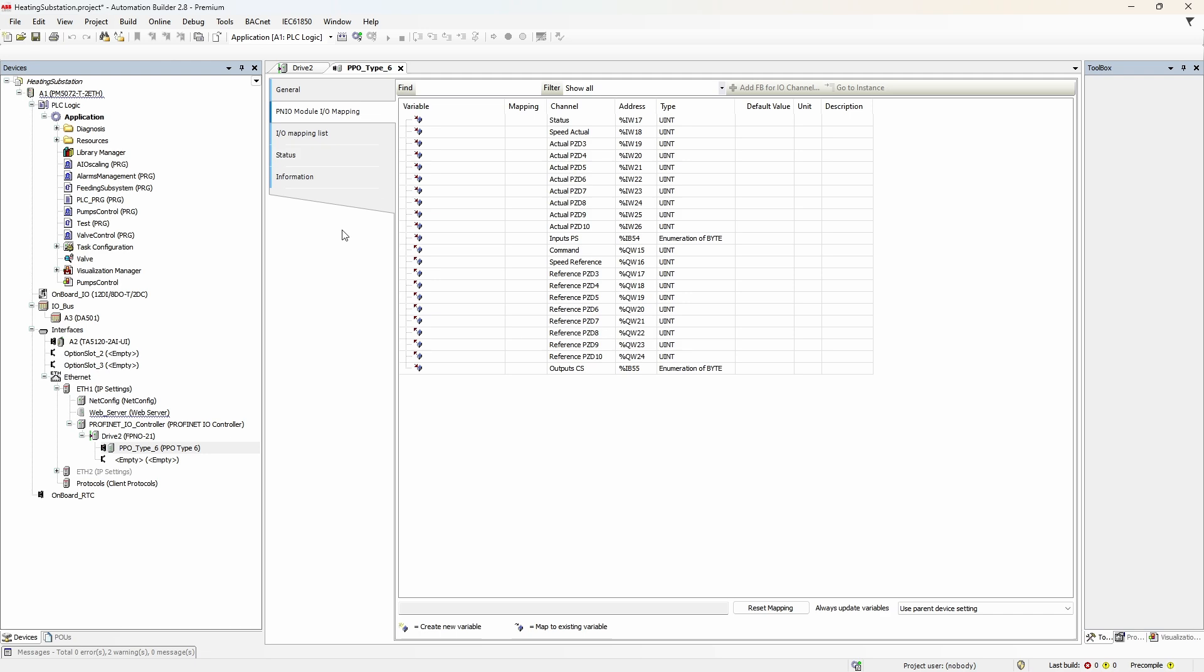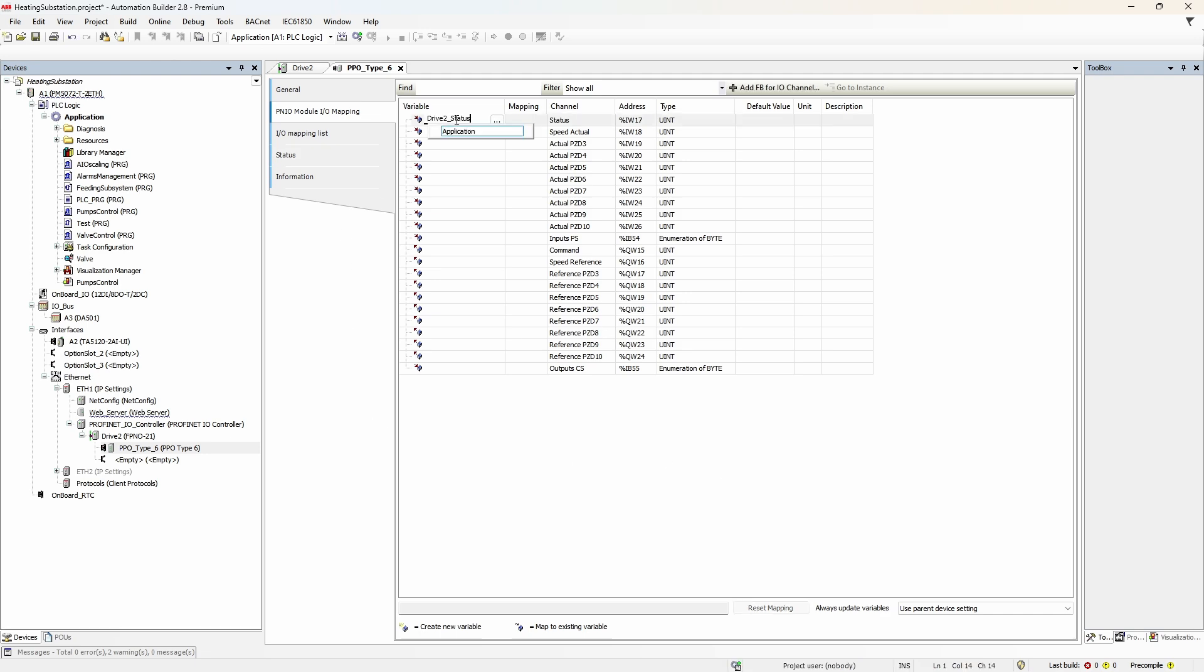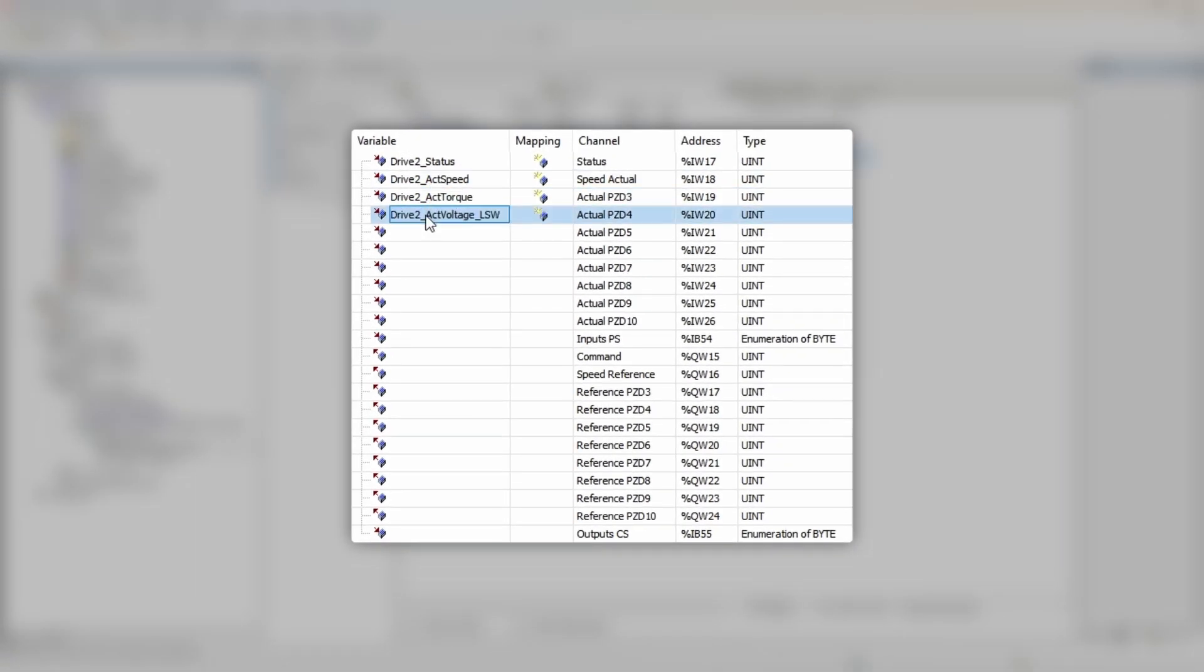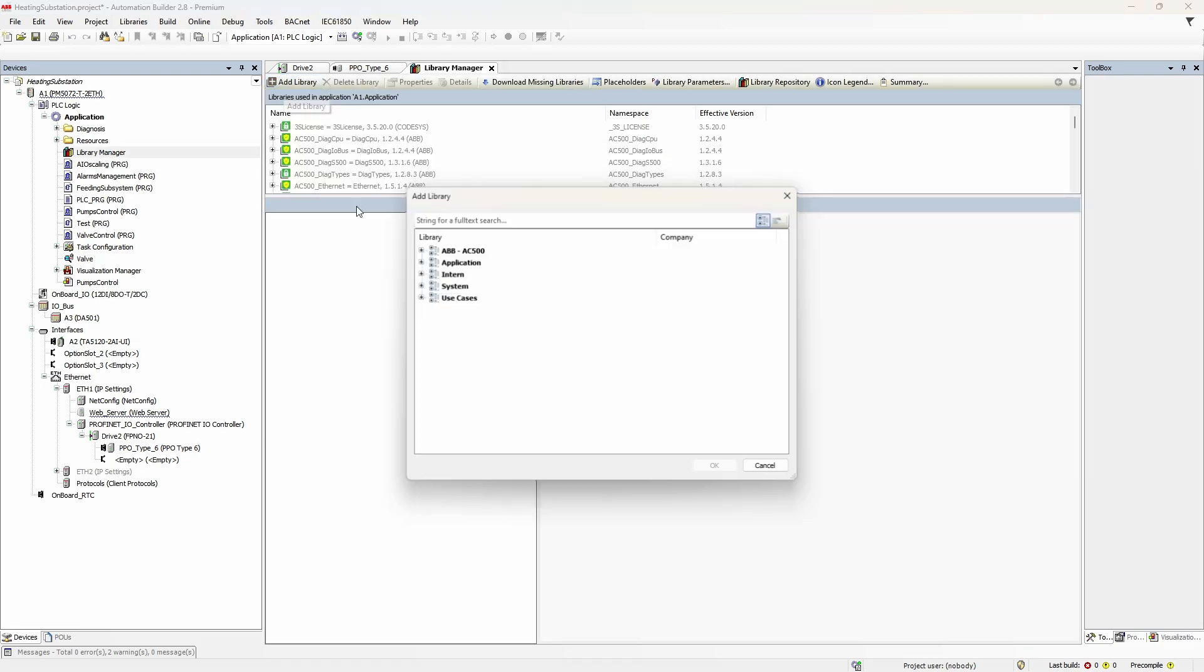Okay, let's say we're good with PPO type 6. Go to PPO settings and then to IO mapping. Now just give those parameters we have configured names. Please note that the actual voltage value is split into two words—we'll have to convert them into one real type value later. That would be all with the communication part.